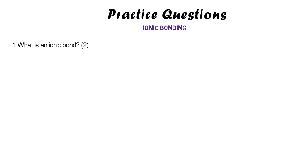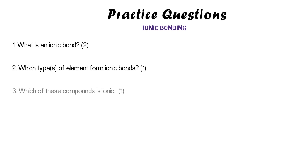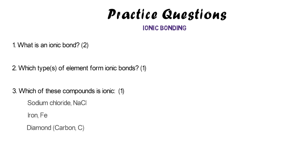Here are some practice questions about ionic bonding. Number one: what is an ionic bond — note this is a two-mark question. Number two: which types of elements form ionic bonds? Number three: which of these compounds is ionic — sodium chloride, iron, diamond, sulfur dioxide, or oxygen? Pause the video and have a go.